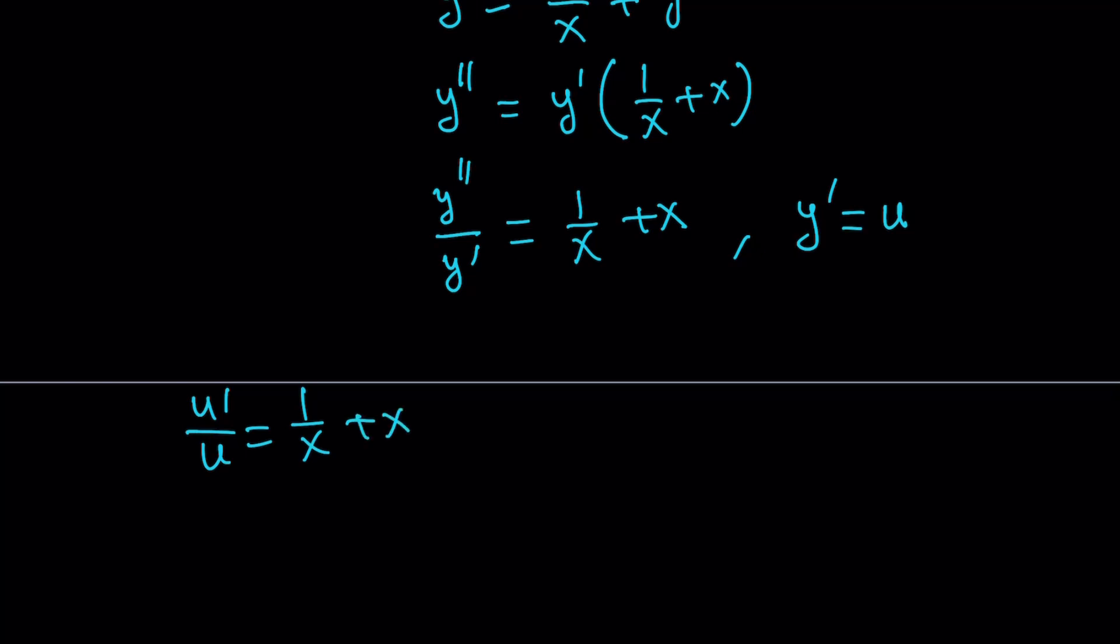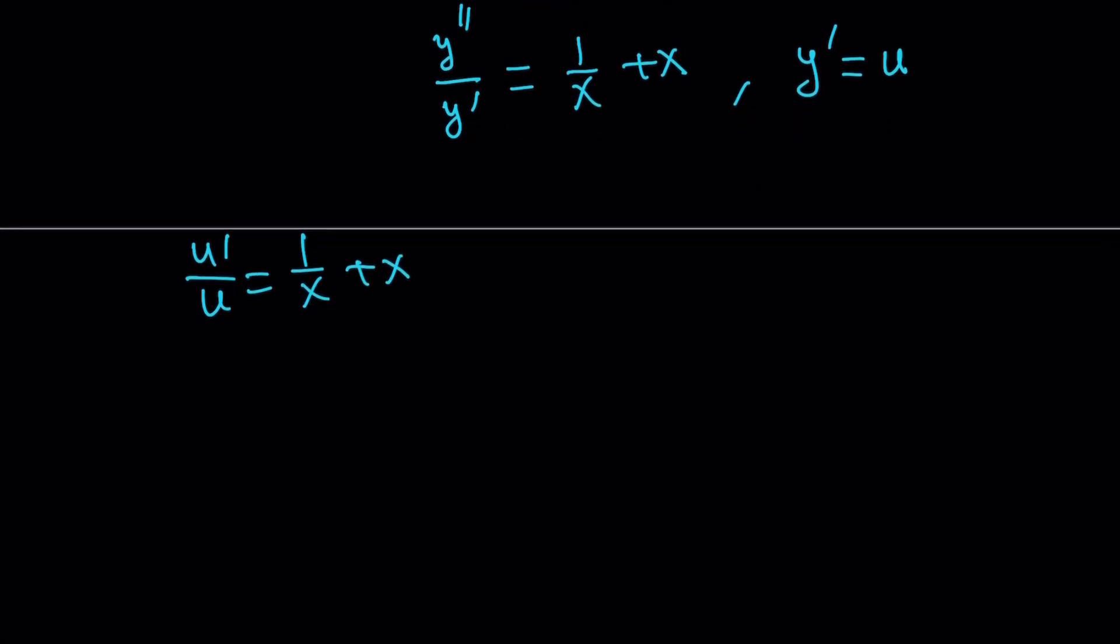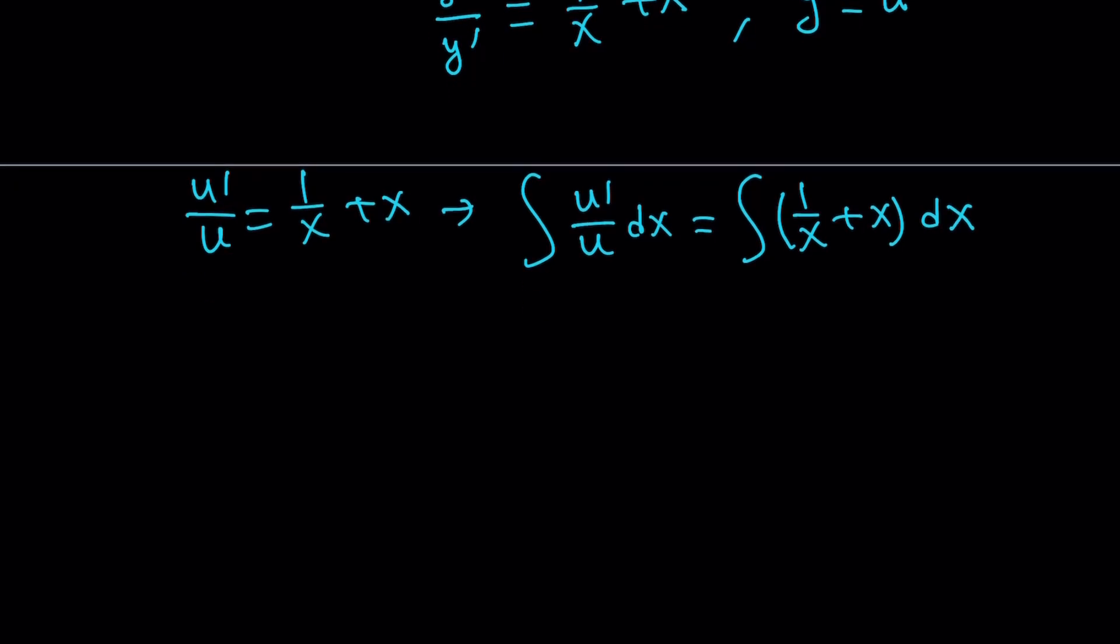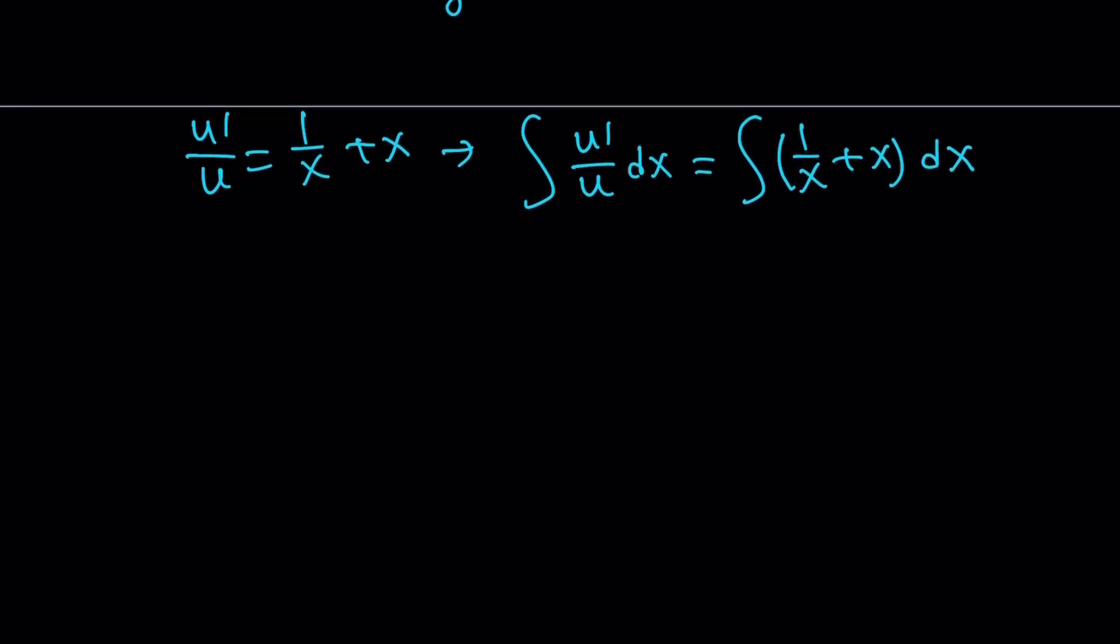Now, at this point, you can definitely integrate both sides. And let's see what happens. If we do, the integral of u prime over u dx is going to be the same as the integral of one over x plus x dx. So we're integrating with respect to x because both of these are functions of x. And u prime over u, as you will remember, that is the derivative of ln u, right? Obviously, you can just replace it with ln u.